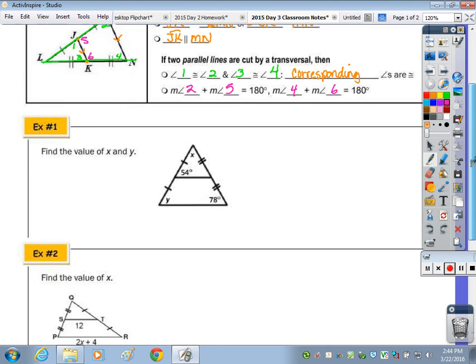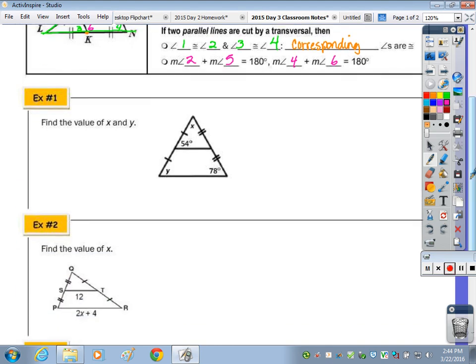Now in number 1, it says find the value of X and Y. It's indicating that this is a midpoint given the marks, and that point is also a midpoint of that side. So therefore, I do have a midsegment. And with a midsegment comes parallel lines. So if I look at this transversal here, this is Y, that is congruent to that angle there. So Y is 54 degrees.